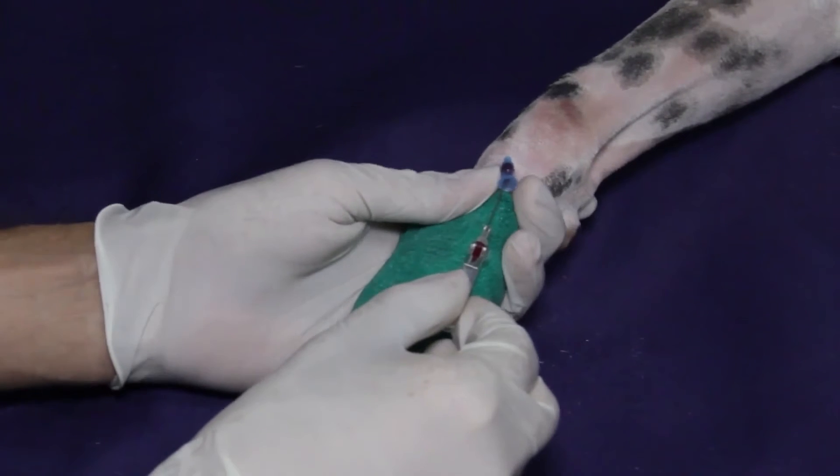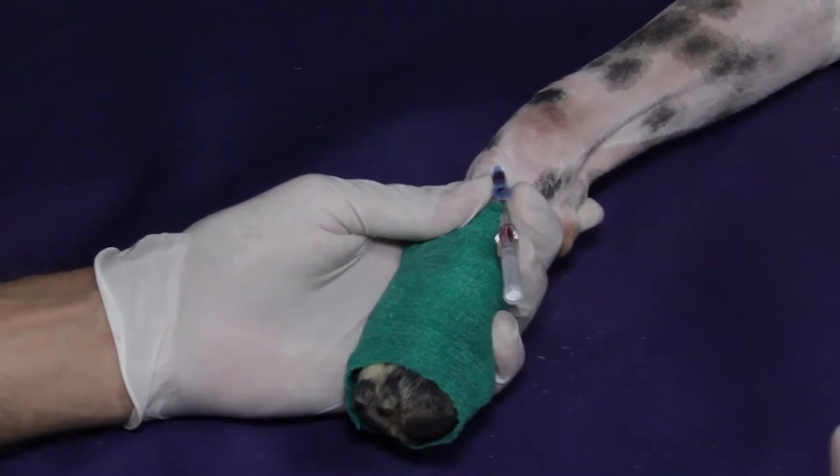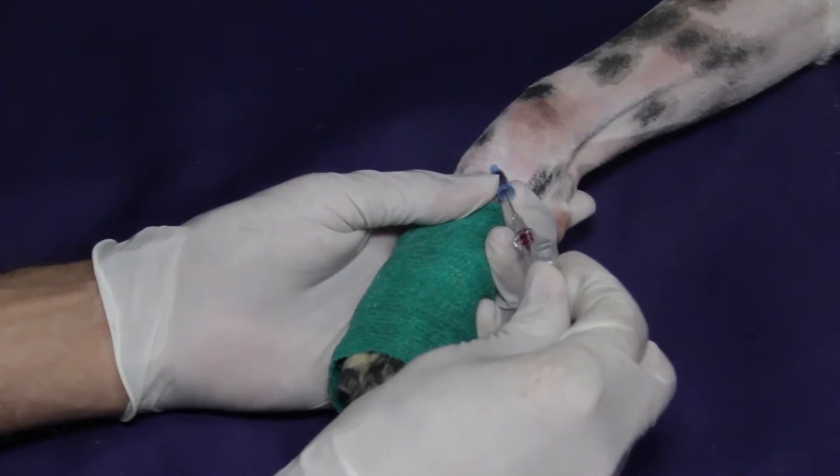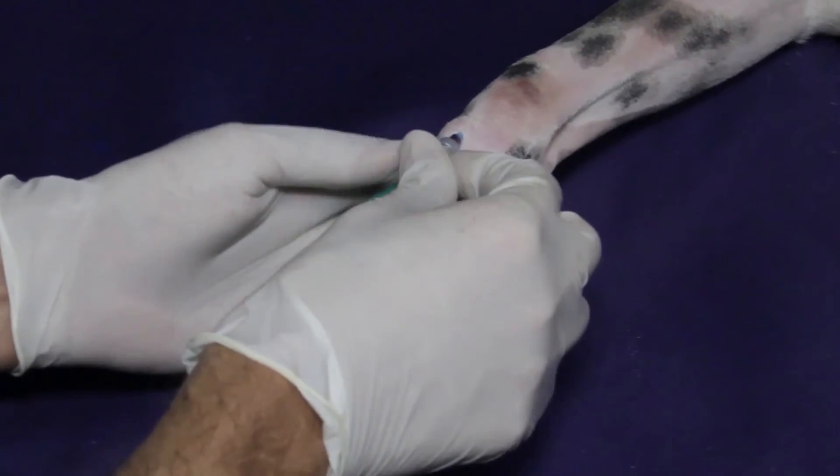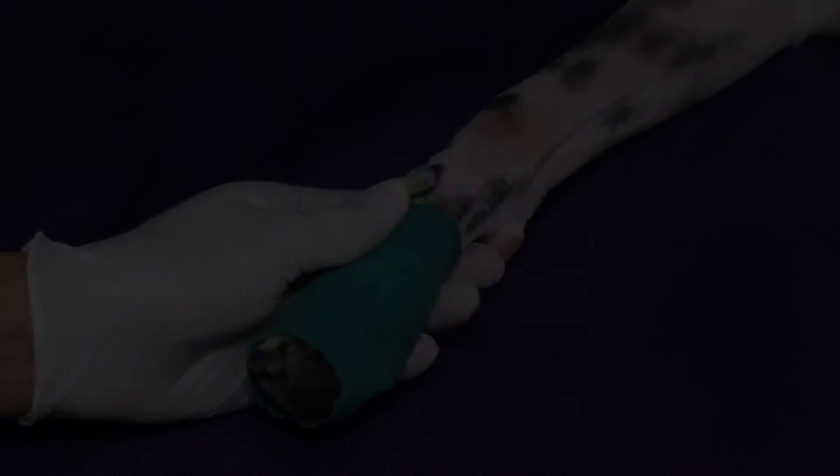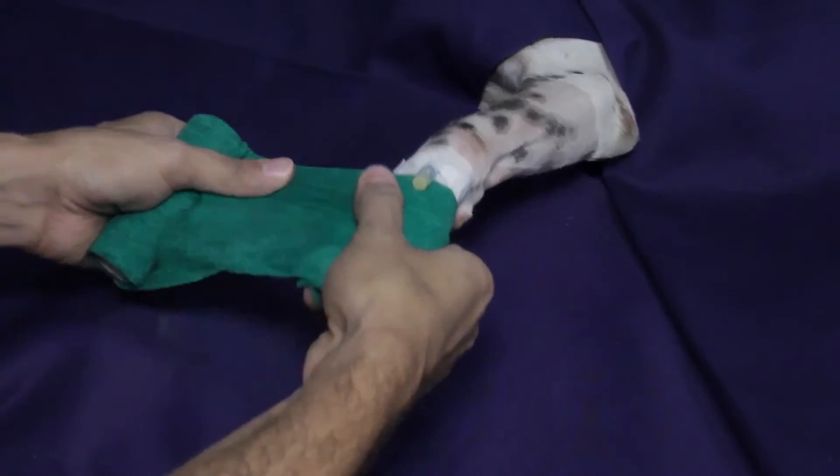As part of a multimodal approach, intravenous regional anesthesia is indicated for procedures involving the distal limb, such as mass removals, biopsies, digital amputation, foreign body removal, and laceration repair. It is preferable to still use general anesthesia when using this technique.